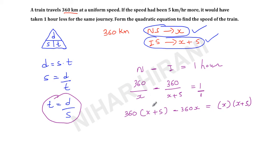Now I will do further simplification. So this is 360X, 360 times 5 that is 1800 minus 360X equals X times X—X square—X times 5—5X. Now these 360X and these 360X will be cancelled. So what I am left with: 0 equals—I will take this 1800 to the other side—X square plus 5X minus 1800, and this is my equation.